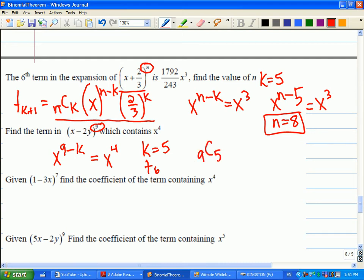So now that I've got enough information, it's going to be nine choose five, x to the fourth, negative two y to the fifth. And let's see here, nine choose five, so I get negative four zero three two x four y five.